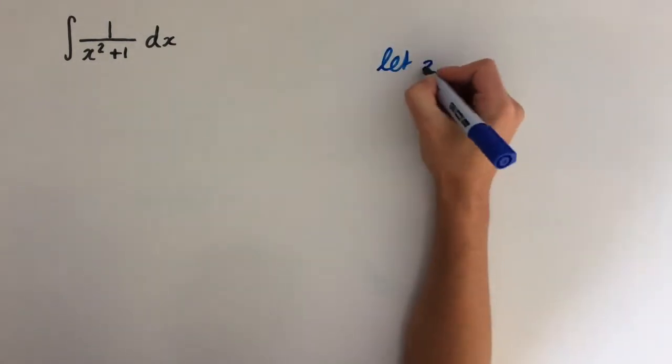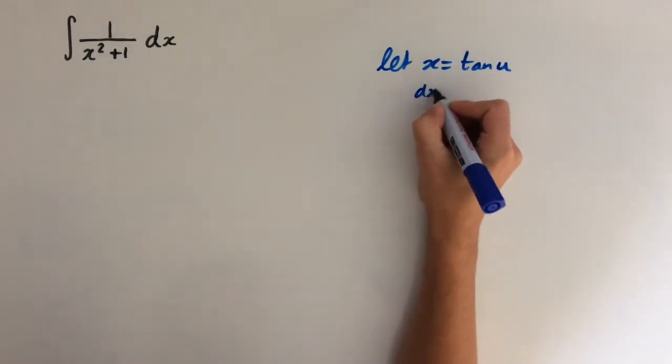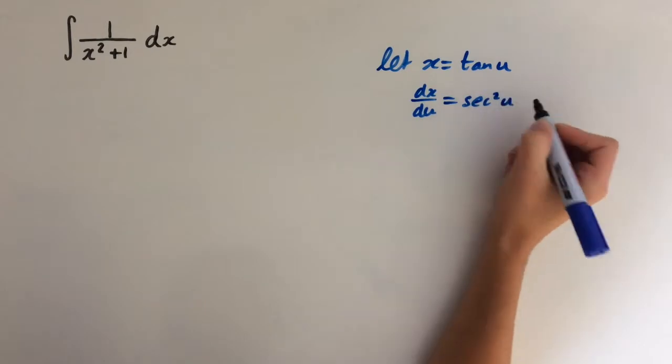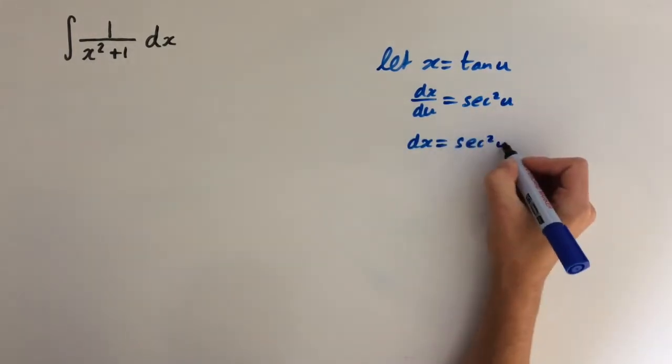So we're gonna let x equal tan of u. So now dx over du equals sec squared of u, and rearranging for dx we get sec squared of u du.